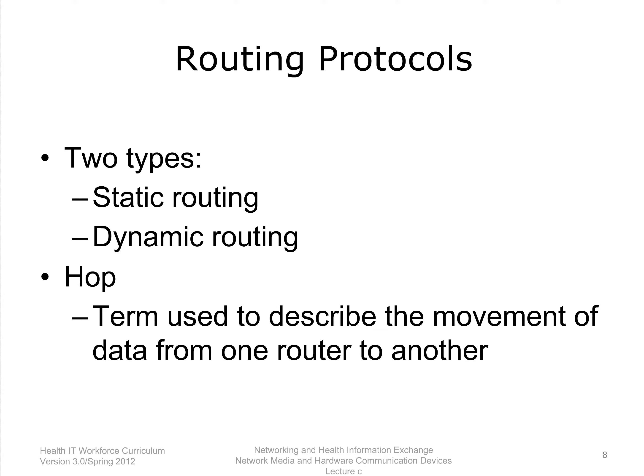Routers choose the best route for a packet to take to arrive at its destination. There are two ways a router knows what the best path is: static routing and dynamic routing. In static routing, a network administrator programs a router to use a specified path to move data between two nodes. In dynamic routing, routers automatically calculate the best path between nodes and accumulate this information in a routing table. Routers share information about routes with each other. A hop describes the movement of data from one router to another; if a packet travels across three routers, it is said to have taken three hops.